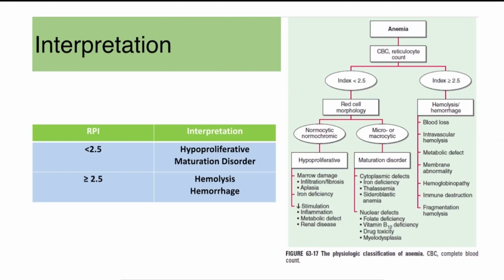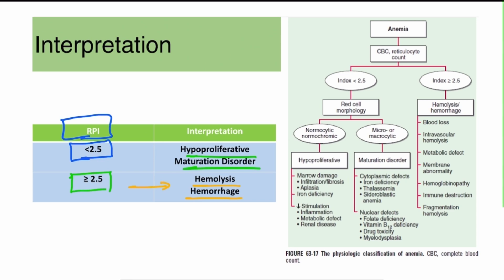If the reticulocyte production index is less than 2.5, it suggests the bone marrow is unable to produce adequate reticulocytes to compensate for the anemia. This can occur in hypoproliferative disorders or maturation disorders, such as bone marrow damage, iron deficiency, or renal disease.